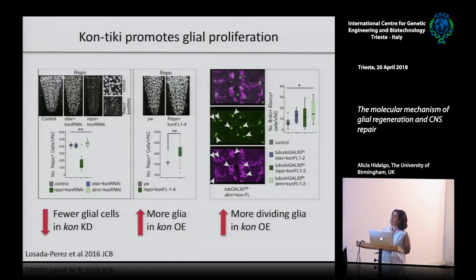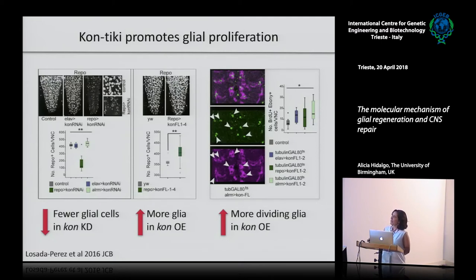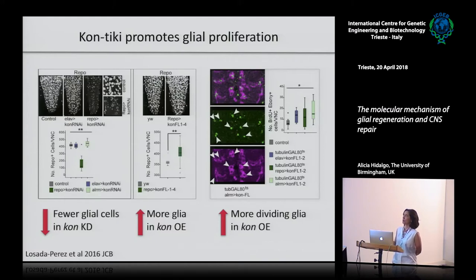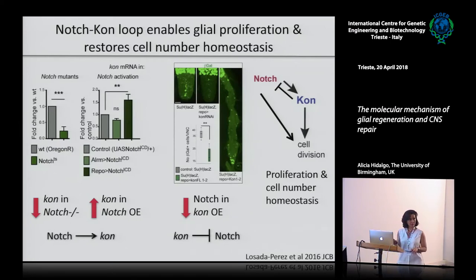If you knock down Contiki specifically in the glia, you have a reduction in the number of Repo-positive cells - a loss in glial cells. Glial cells are visualized with anti-Repo, which is nuclear, and counted automatically with IMARIS, which allows us to count lots of genotypes with huge sample sizes quickly. Conversely, when you overexpress Contiki you have more glial cells. This suggested that Contiki regulates glial proliferation, which Maria could see with BRDU incorporation, looking at BRDU co-localization with the neuropil glia marker Ebony. Contiki promotes glial cell proliferation.